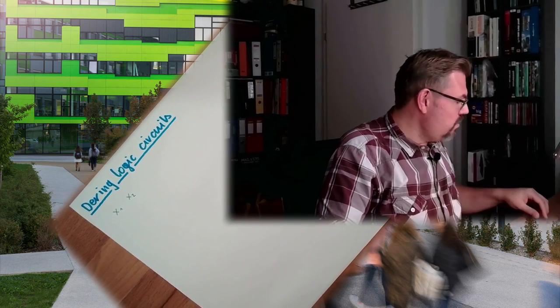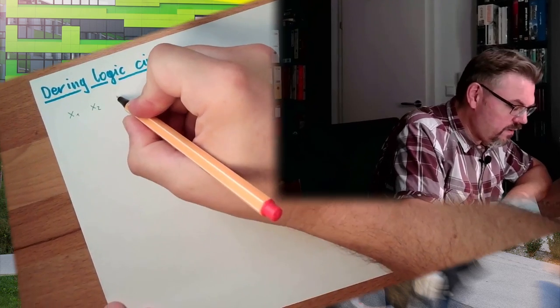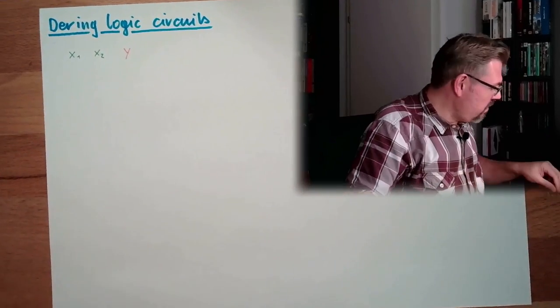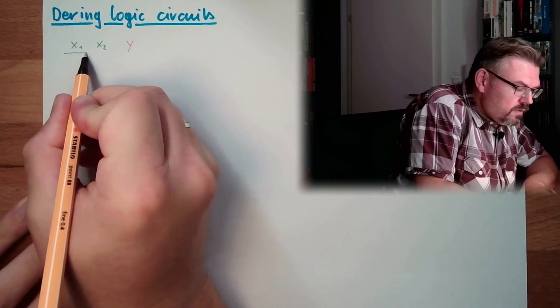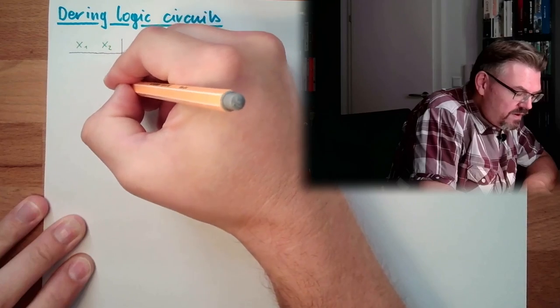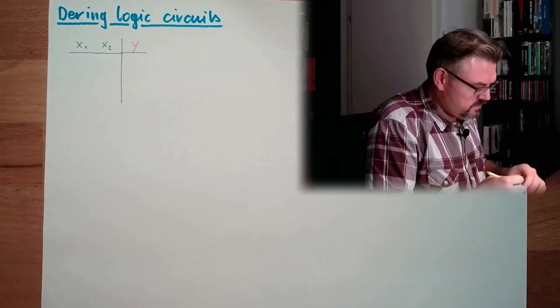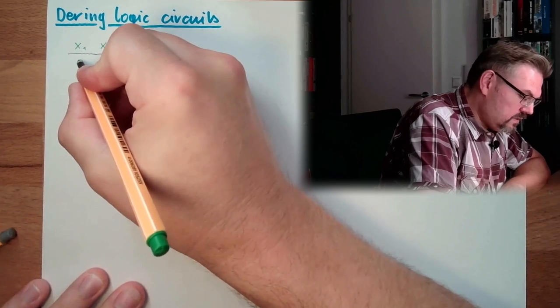So let's have a table of truth example with two inputs. So we have an x1 and we have an x2. And we have one output, my y. And now let's make this table of truth.